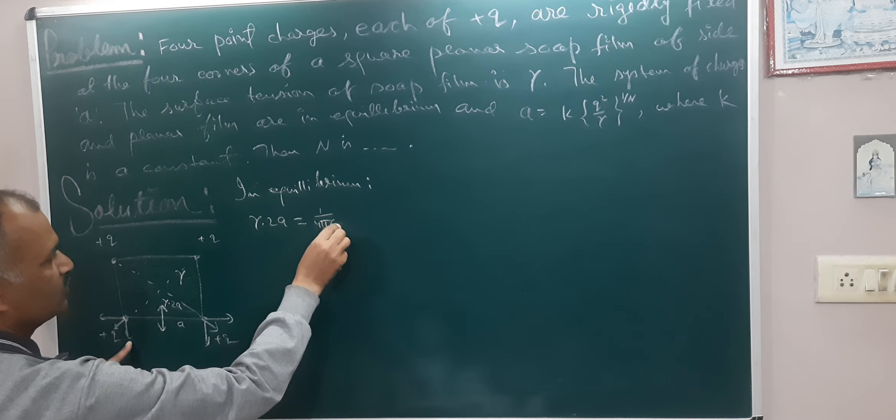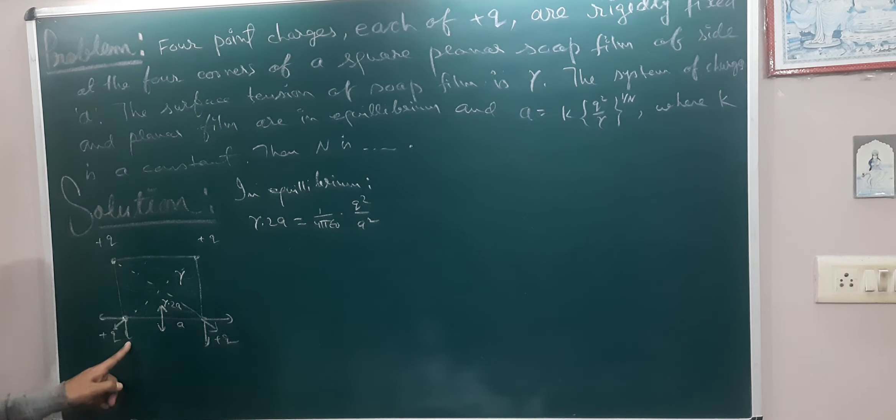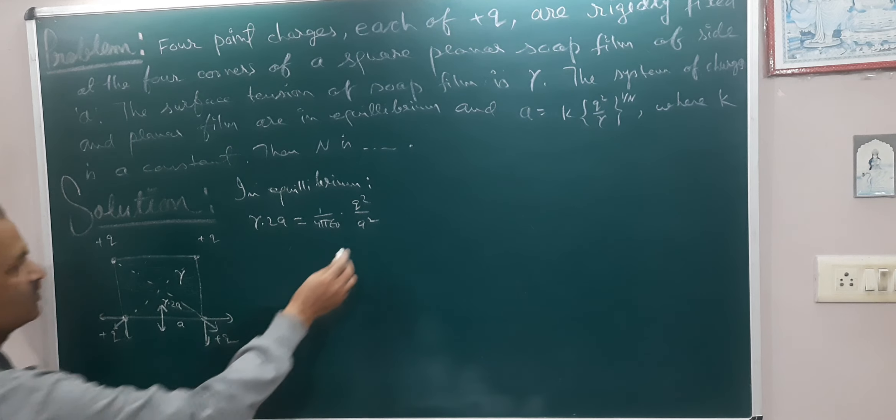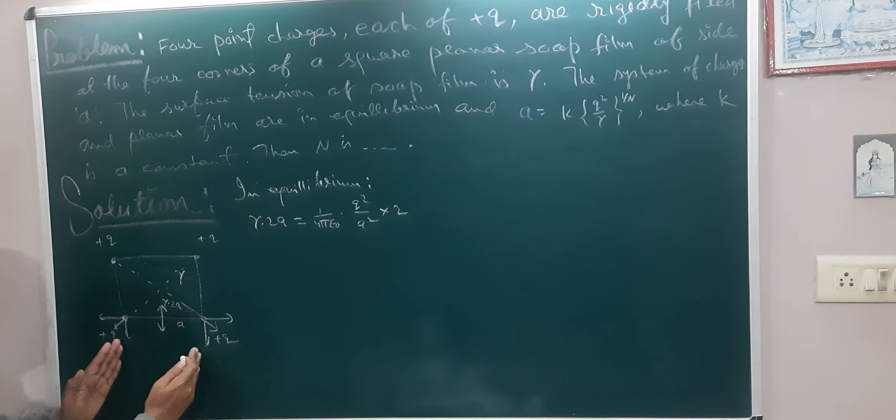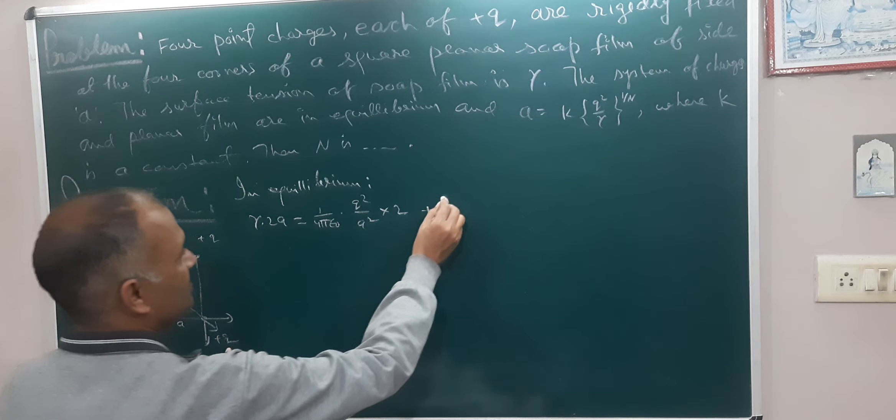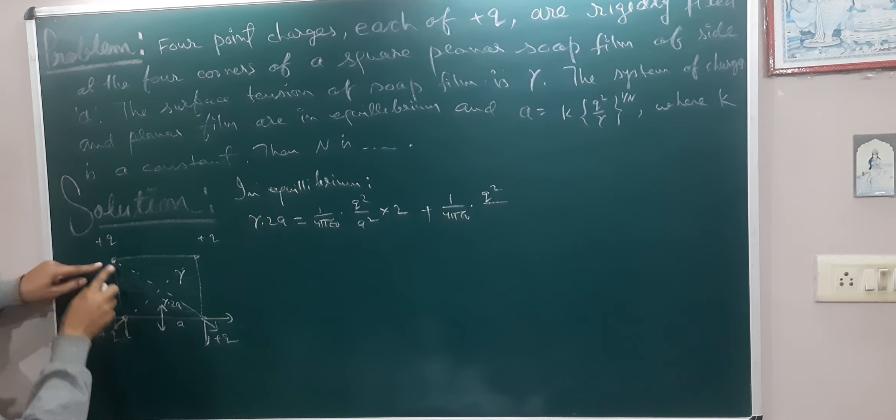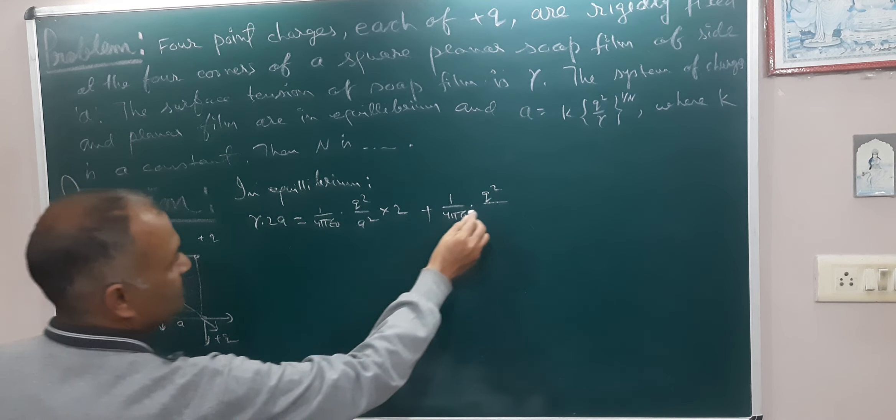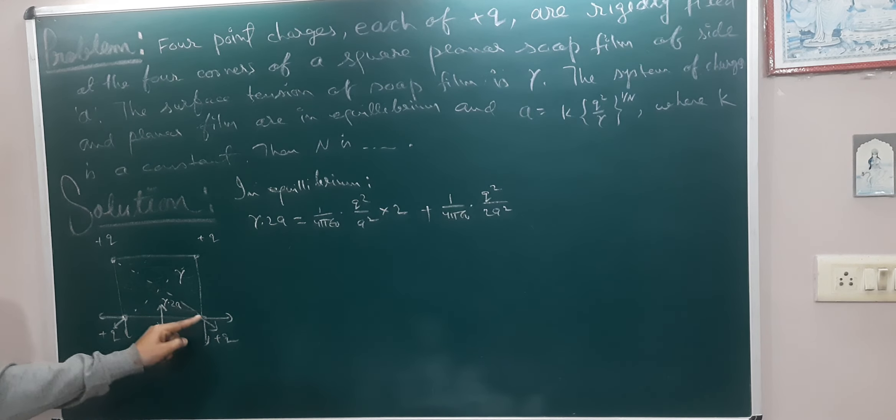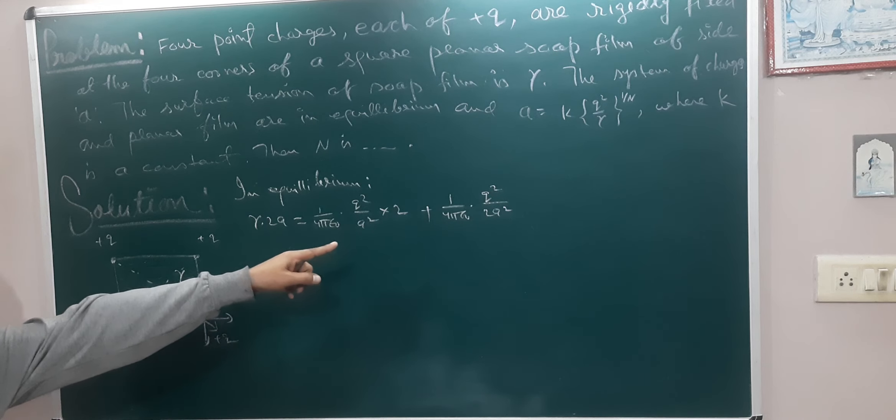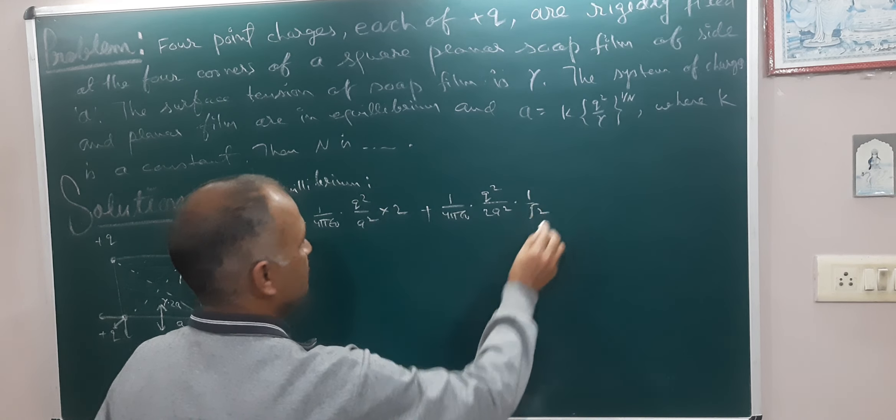1 upon 4 pi epsilon naught, q1 q2 upon x squared. This is the balance of the force. Now we have the component, we will take the balance of the force, cos 45. Cos 45.